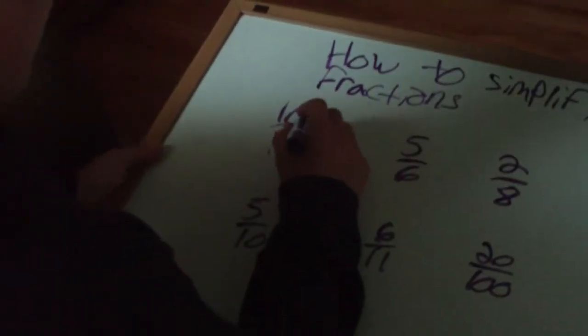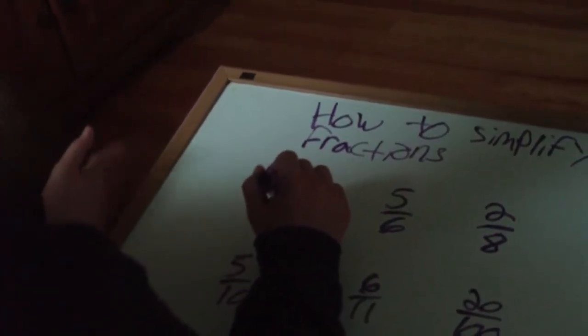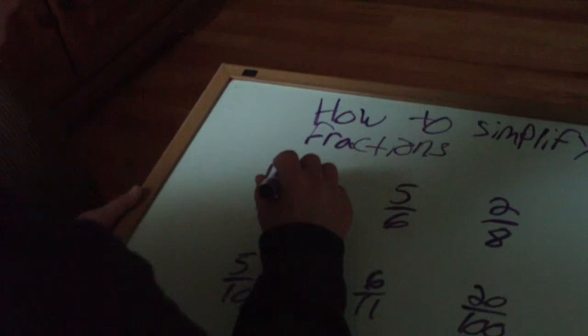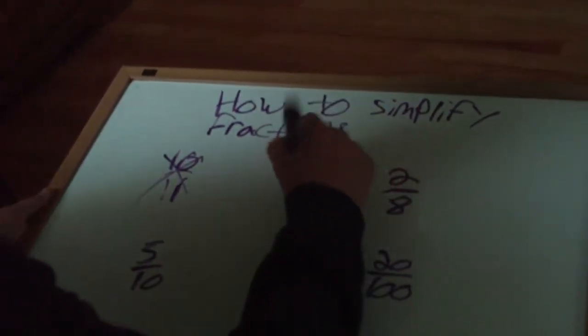Okay, 10/11 can't be simplified because nothing can go into 11 besides 1 and itself. That can't be simplified. Same thing with 5 over 6.